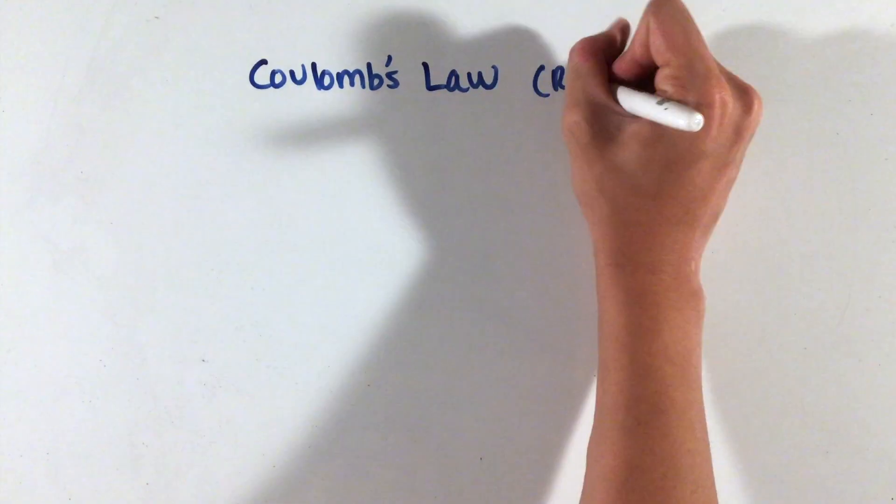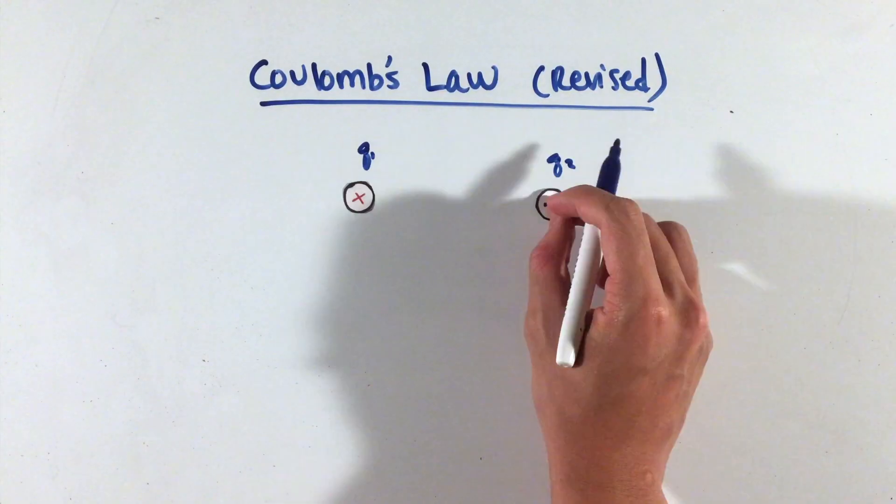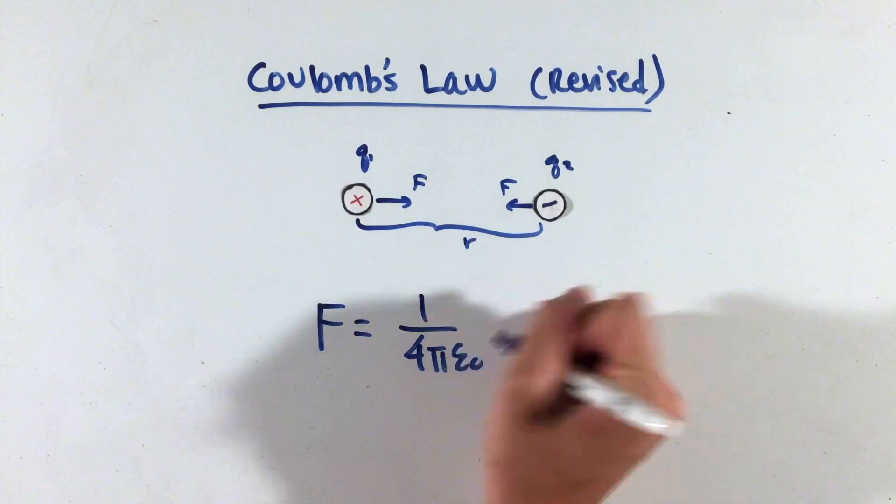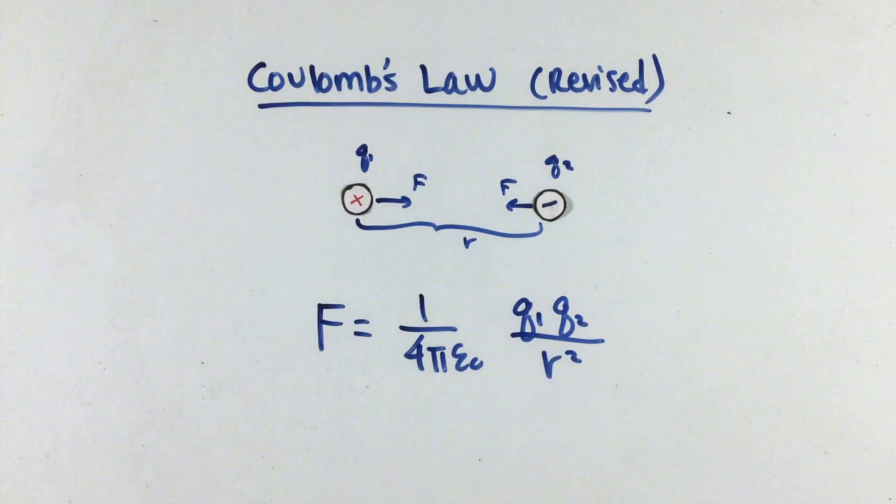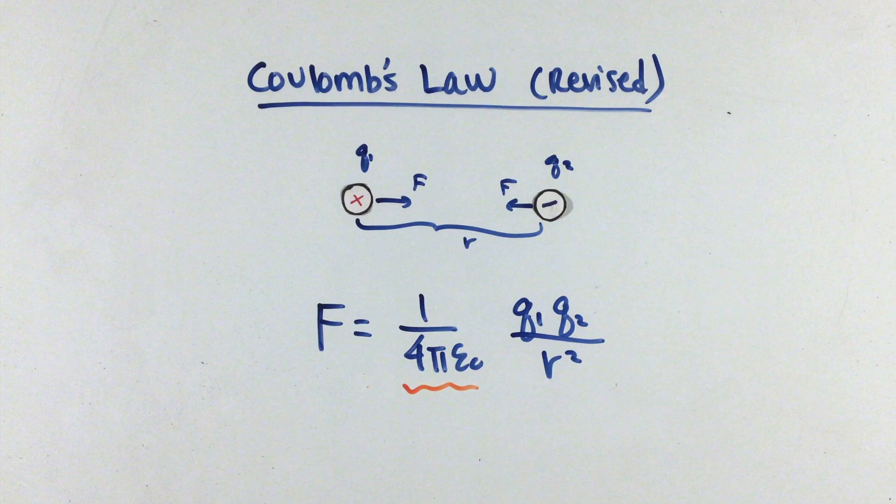With this, let's rewrite our Coulomb's law from AP Physics 1 using this new value, giving us this form of Coulomb's law here. You should familiarize yourself with using 1 over 4 pi epsilon naught instead of the k from AP Physics 1, as this form is much more common in upcoming units and physics classes.